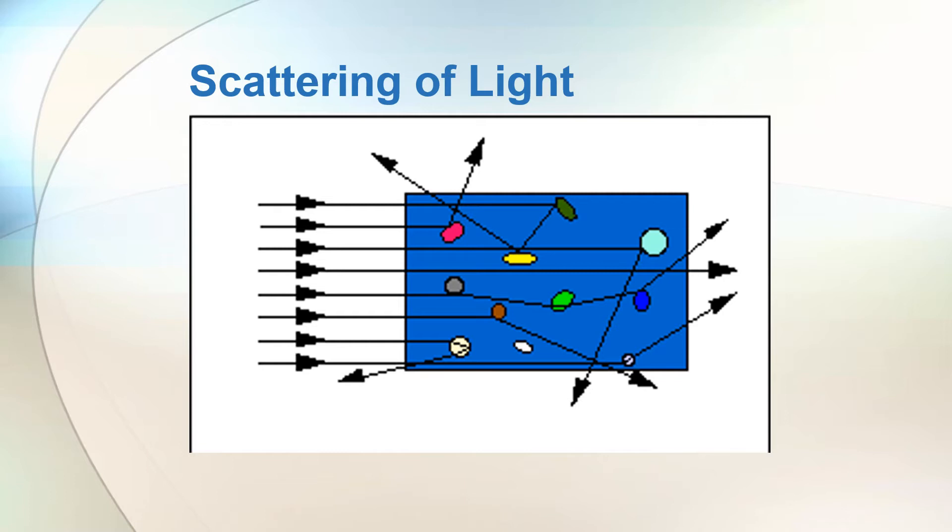But there is another principle that is very important in the next set of light phenomena, and this is the scattering of light, which is a phenomenon in which light rays get deviated from its straight path on striking an obstacle like dust or gas molecules, water vapors, and many more.